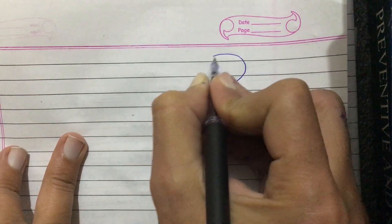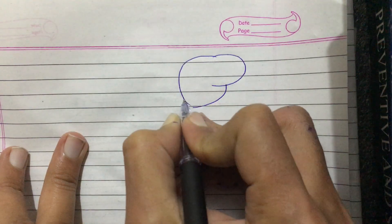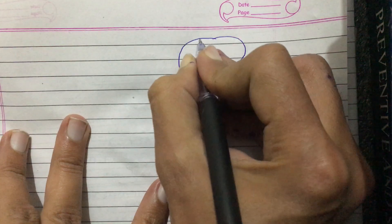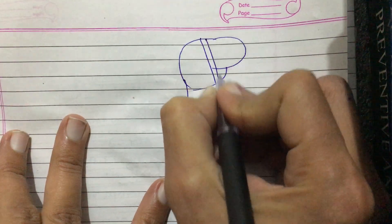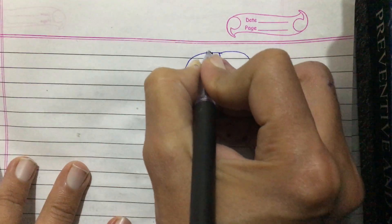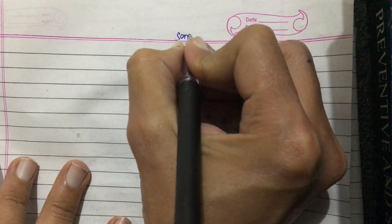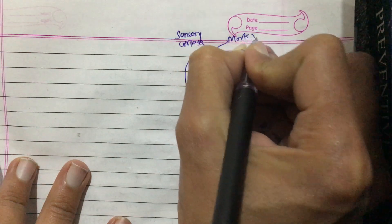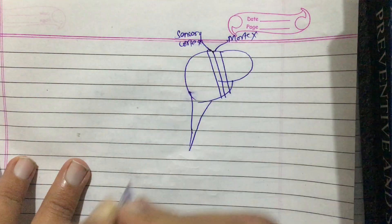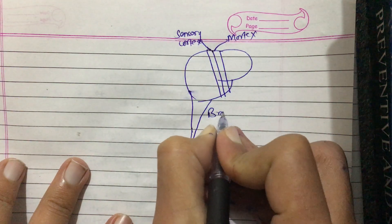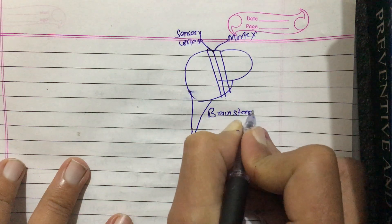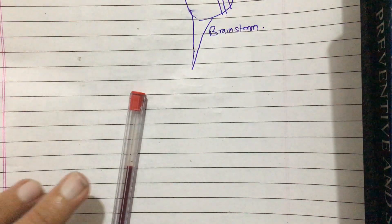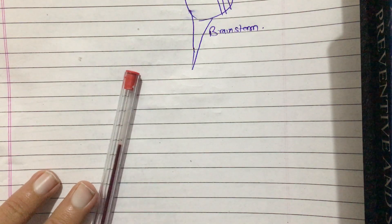We have two main areas: the sensory cortex and the motor cortex in the cerebral cortex, and the brainstem. Multiple efferent pathways are derived from the periphery to the central nervous system.